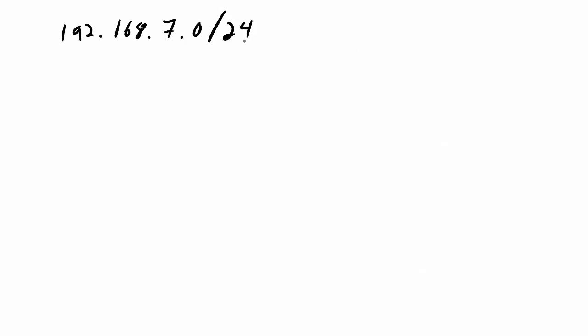If I need to split this network into four, I just look at the range of addresses. To split into four, I need to borrow two bits and add them to the subnet mask, going from a /24 to a /26. I have 256 addresses divided by four — that gives me 64 addresses per network.